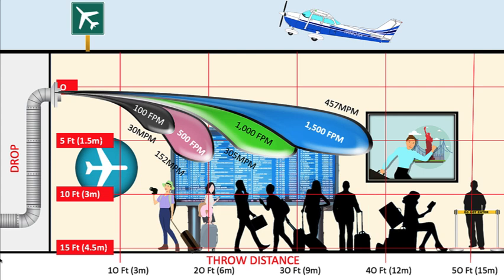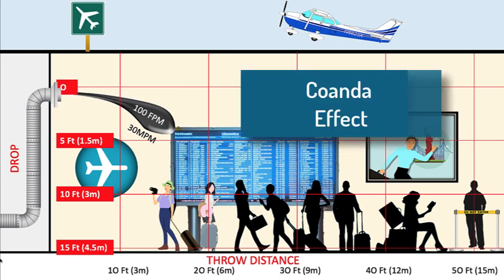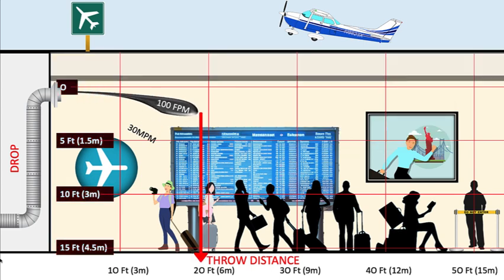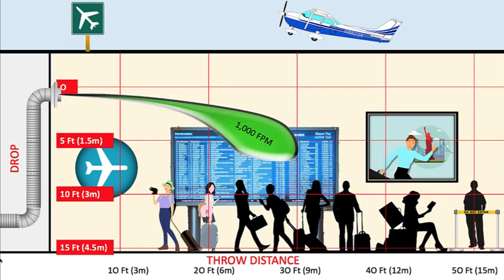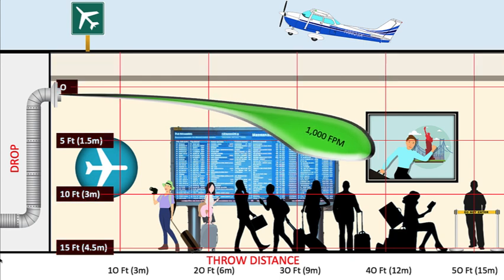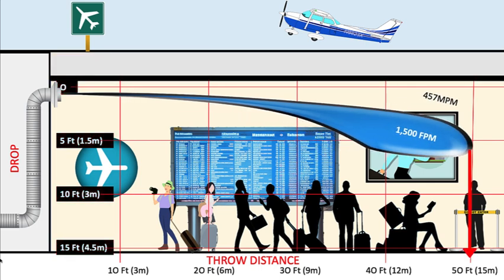The greater the velocity, the greater the throw distance. The throw distance is affected by the location of the ceiling, as shown in this chart. We now have what is called the Coanda effect — the tendency of the air to follow the adjacent ceiling surface, allowing for greater throw distances. With a velocity of 100 fpm, the air only drops 1 foot but reaches 19 feet. At 500 fpm, the drop is 8 feet with a 28-foot distance. At 1,000 fpm, the air drops 7 feet and reaches 42 feet. And finally, a velocity of 1,500 fpm sees the air drop 6 feet with a throw of 50 feet.